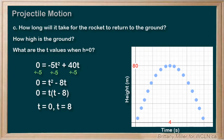Now, that first result of t = 0 is at the beginning, before the rocket has launched. So, it will take 8 seconds for the rocket to reach the ground again.